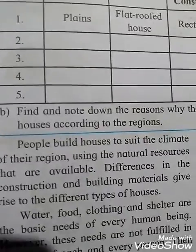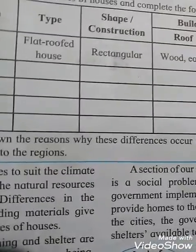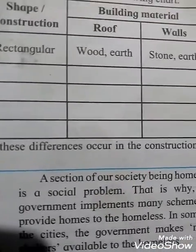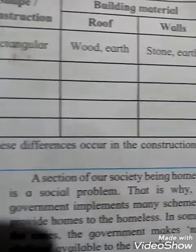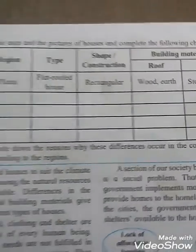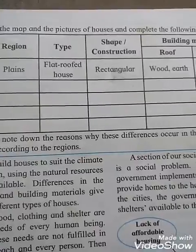For mountainous regions, houses are multi-storey houses. The shape and construction is rectangular. The roof is tiles, iron sheets, or wood, and the wall is stone and bricks. You have to observe the map and pictures of houses and complete the following chart.